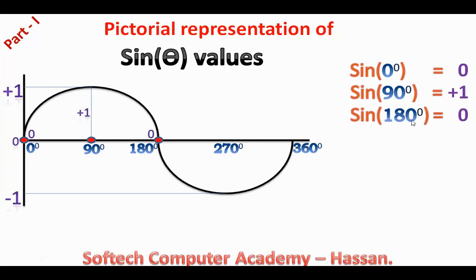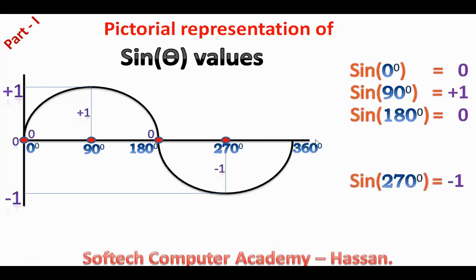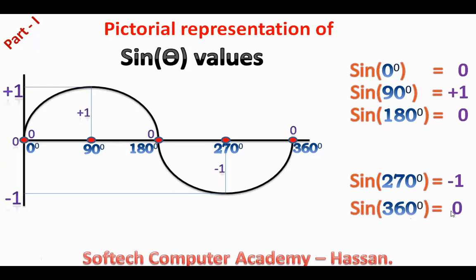180 degrees is 0. This is 270 degrees — sine 270 degrees equals negative 1. The last one is 360 degrees. At the 360-degree position, the sine intersects the magnitude of 0, so sine 360 is equal to 0.